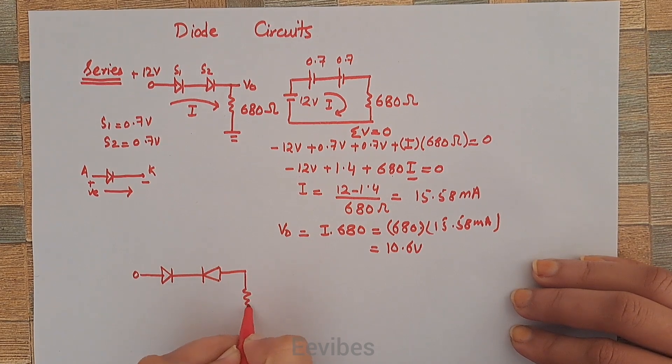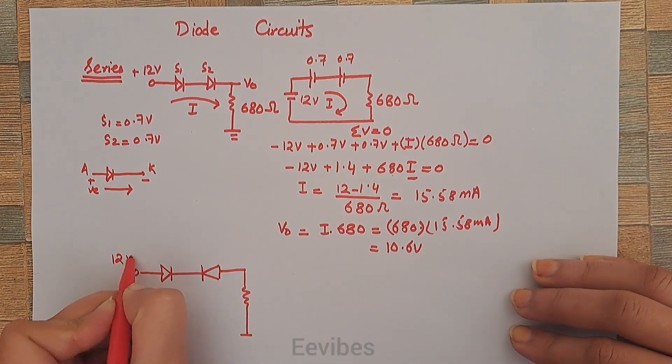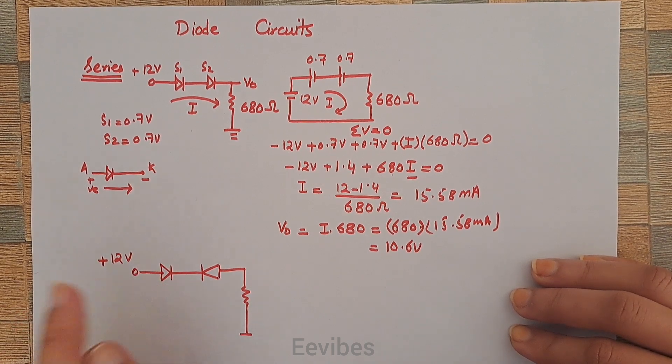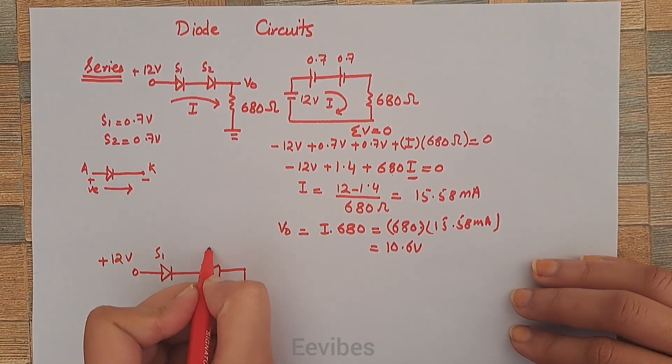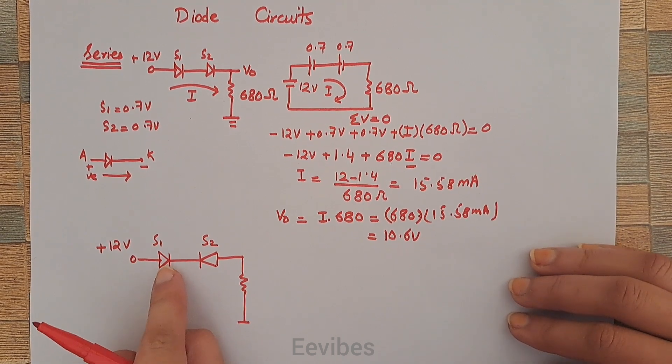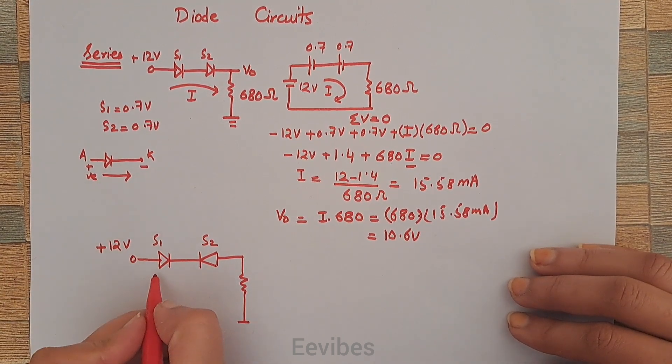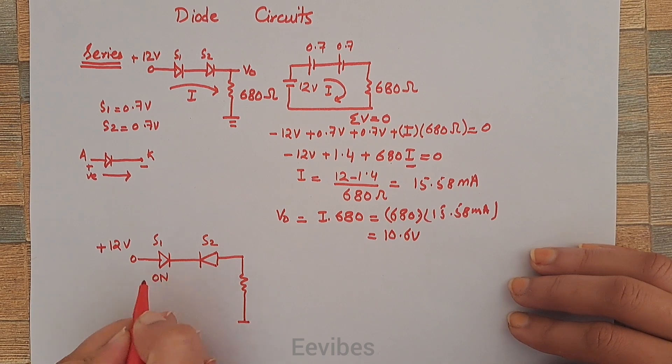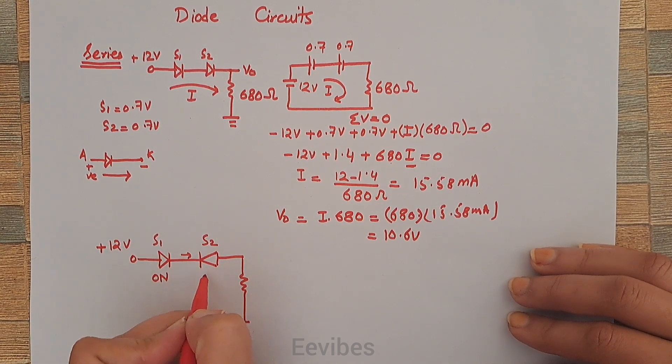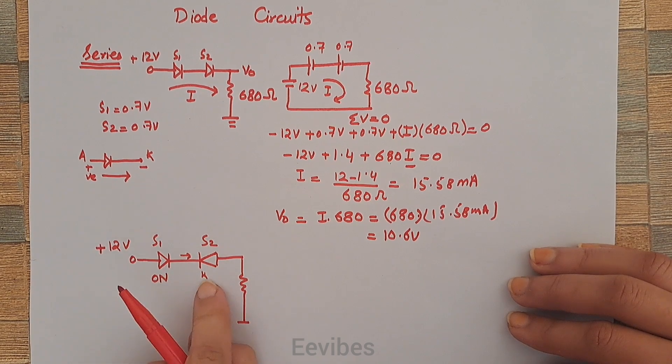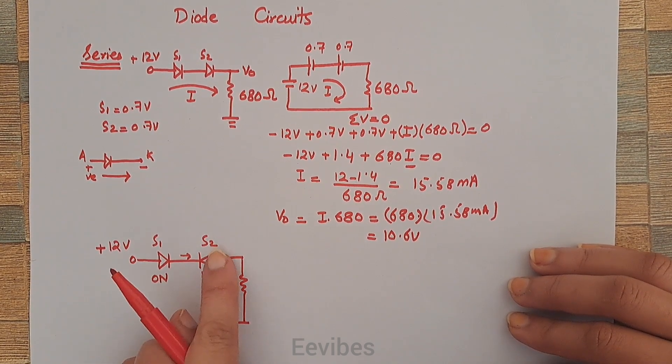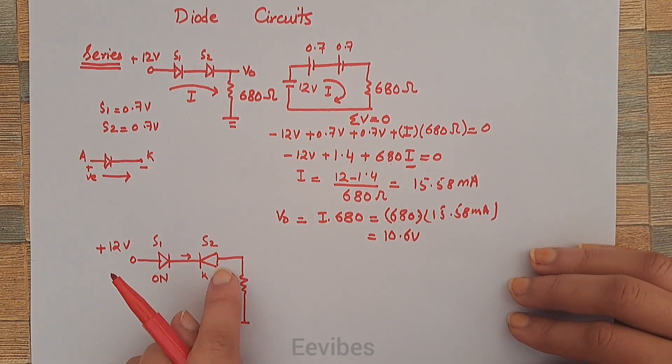+12 volt supply is connected with silicon diode 1, so its anode is at higher potential and it will be turned on. But the positive current is trying to enter at the cathode terminal of S2 or the next diode, so in this particular case this diode will be reverse biased and will be turned off.